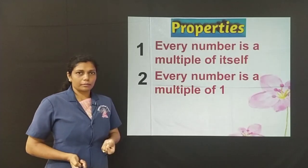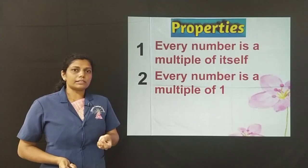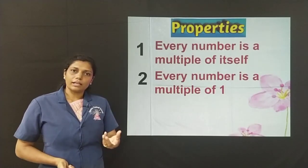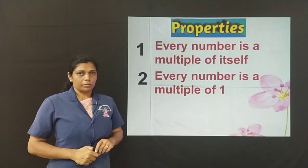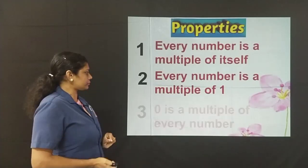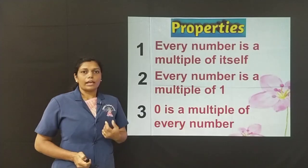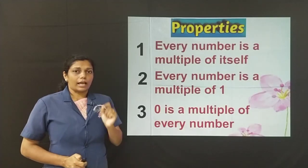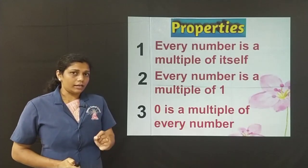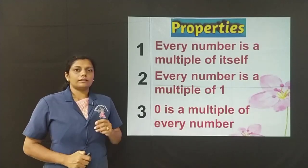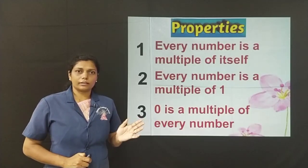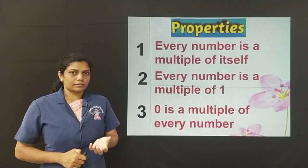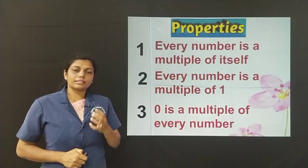Every number is a multiple of 1. 1 has multiples like 1, 2, 3 because 1 one is 1, 1 two is 2, 1 three is 3, and you can multiply 1 with any number to get the same number. So, every number is a multiple of 1. Also, 0 is a multiple of every number. Note, children, that every number is a multiple of itself and that number is the smallest multiple of the number. The multiples of a number are never ending — it continues endlessly. But factors are limited. Factors are finite. A number has a limited number of factors.